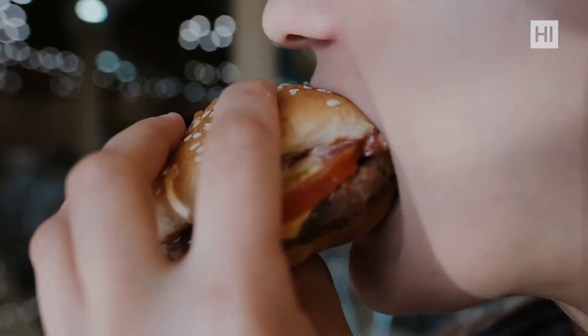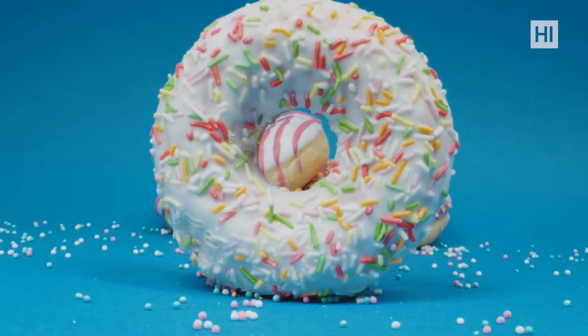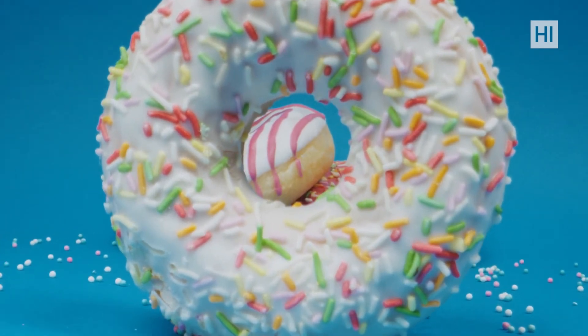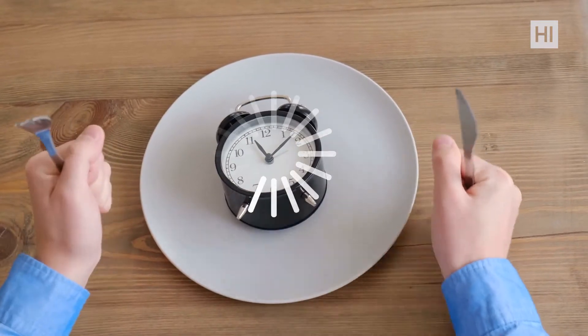Secondly, during your eating windows, you should avoid processed foods and sugar since they not only lower your BDNF, but also ruin your progress with intermittent fasting.